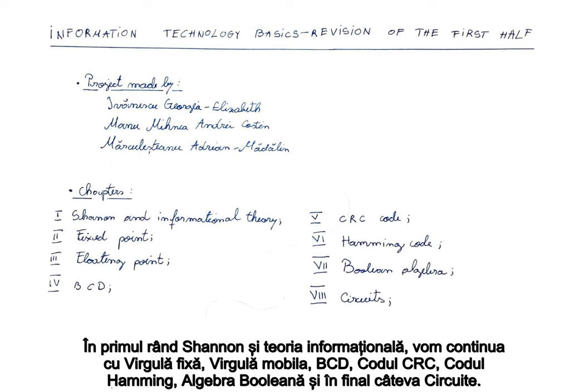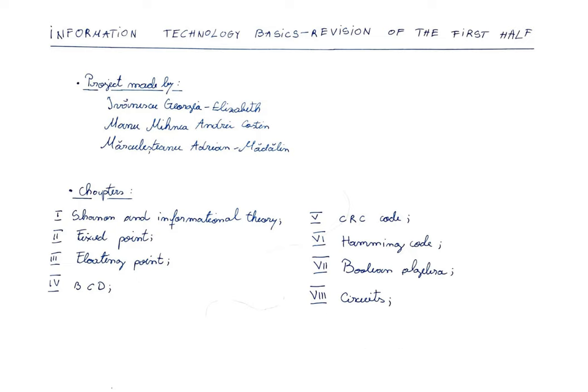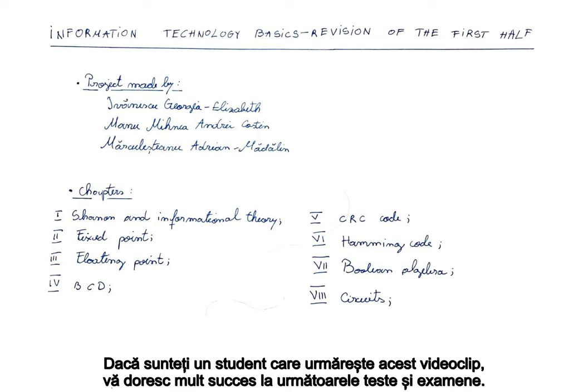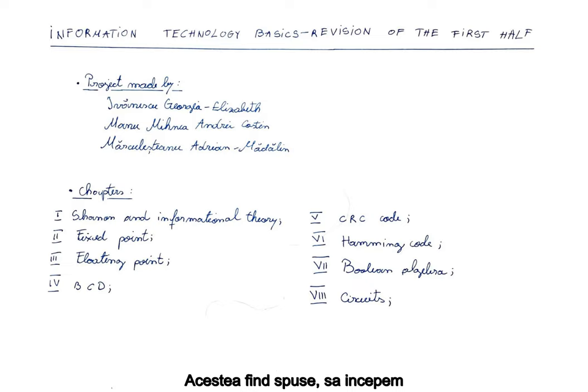First of all, Shannon and informational theory; we will continue with fixed point, floating point, BCD, CRC code, Hamming code, Boolean algebra, and finally some circuits. If you are a student watching this, I wish you the best of luck in your following tests and exams. After seeing all of this, let's get started.